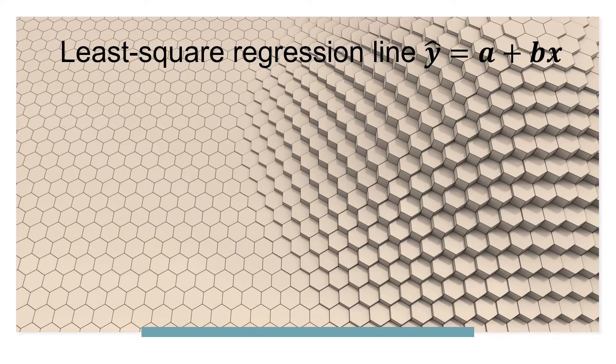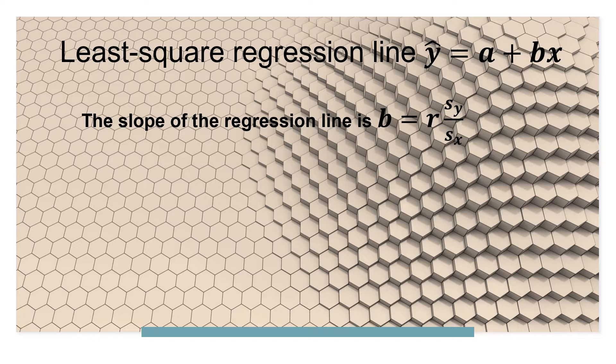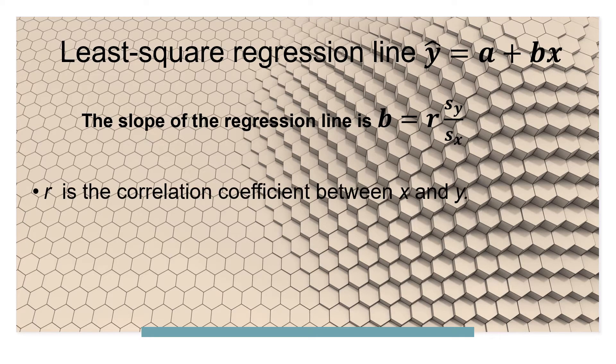The least squared regression line is denoted by y-hat equals a plus bx, where b is the slope of the regression line. The slope b can be obtained using this formula: the correlation coefficient r multiplied by the quotient sy divided by sx, where sy is the standard deviation of y.